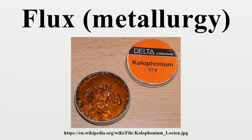Some of the earliest known fluxes were carbonate of soda, potash, charcoal, coke, borax, lime, lead sulfide, and certain minerals containing phosphorus. Iron ore was also used as a flux in the smelting of copper. These agents served various functions, the simplest being a reducing agent which prevented oxides from forming on the surface of the molten metal, while others absorbed impurities into the slag which could be scraped off the molten metal.